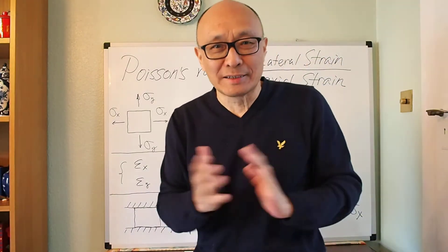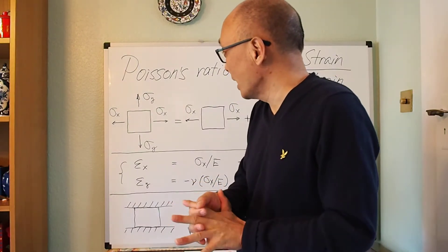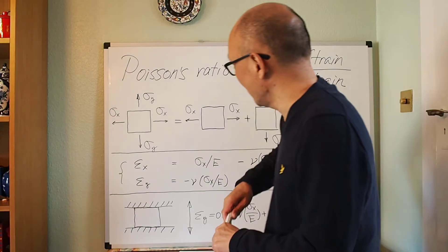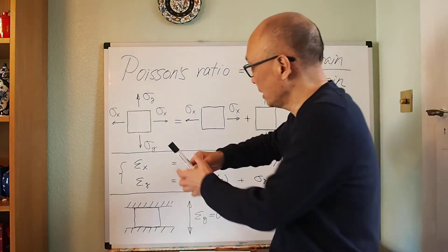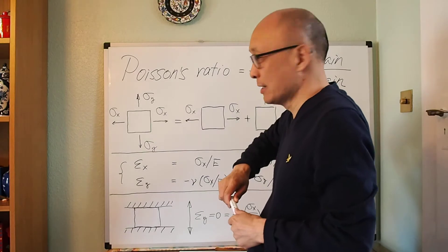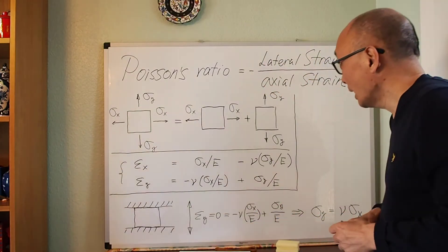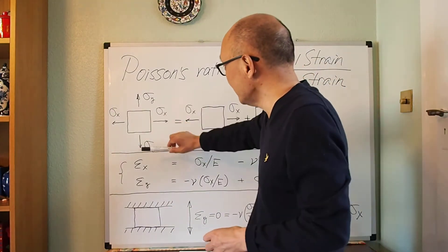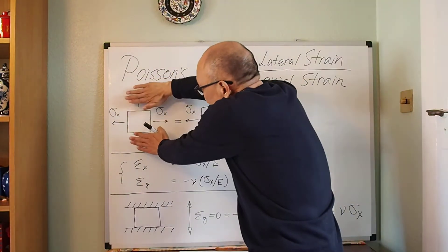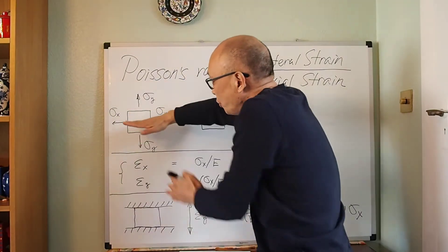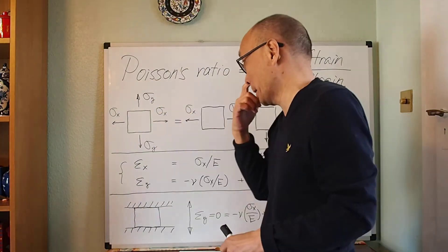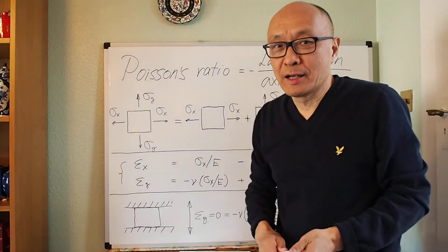Now why does it matter? It matters when we think about a piece of material. If you apply stresses in two directions — say a stress in the x direction and a stress in the y direction — and you want to calculate the corresponding strain in the x and y directions, if you just have one stress you can simply use Hooke's law: strain is stress divided by Young's modulus. But what if you have stress in two directions?